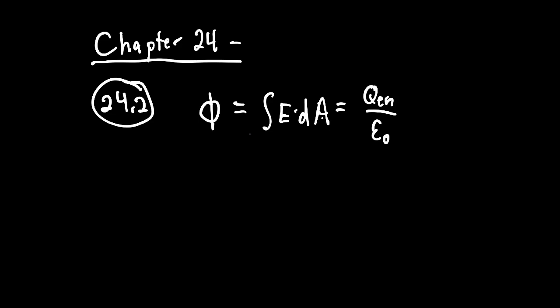This has to do with something called Maxwell's equations — a physicist, James Clerk Maxwell, came up with four equations that describe electromagnetism. So no matter what, if your surface is closed and isolated, you're always going to have a flux equal to the charge enclosed over epsilon naught, no matter what you do to the area or the electric field. Always.